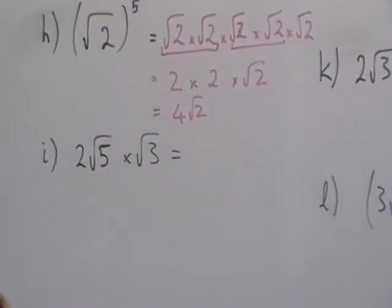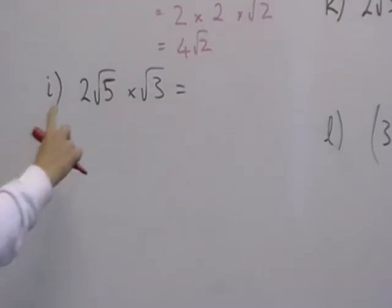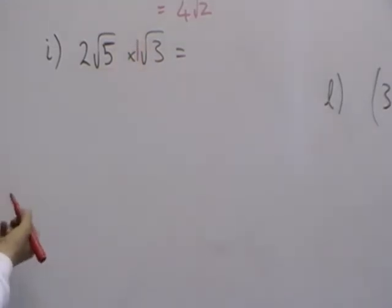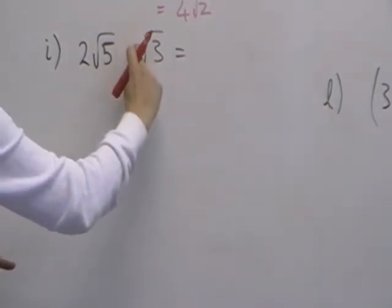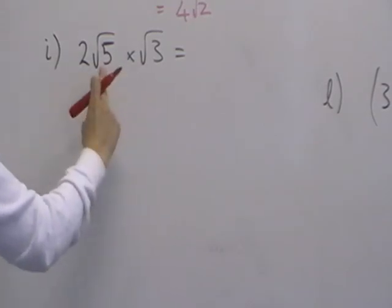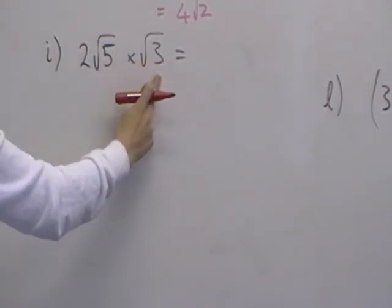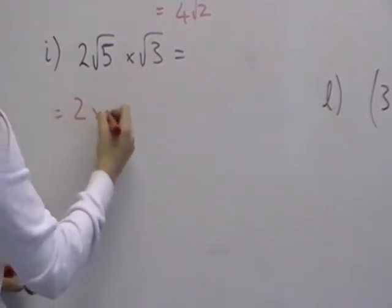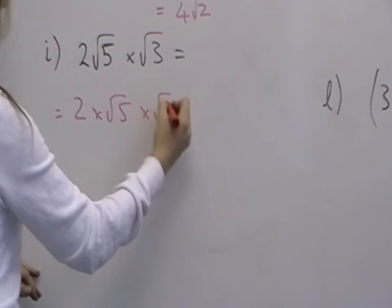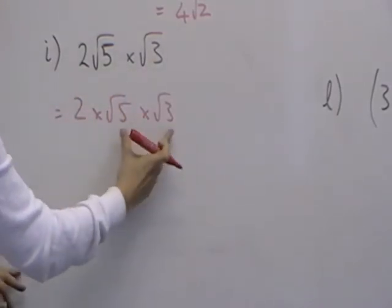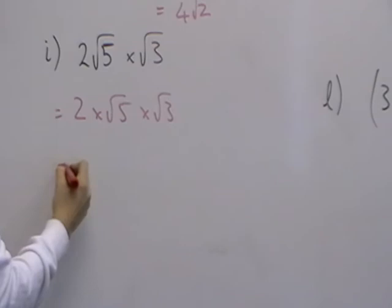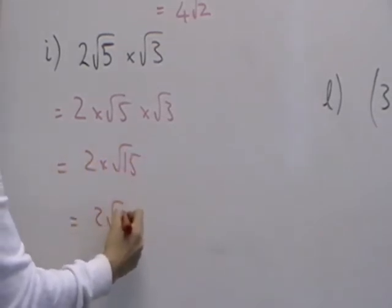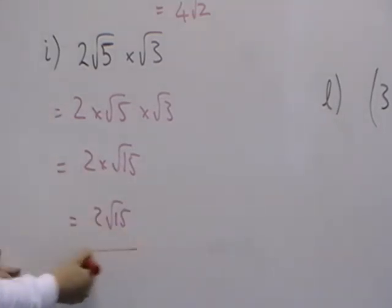Down to I. Now here, we've got 2 lots of root 5 times, and if you like, that's like having a 1 lot of root 3. But we don't always write that number 1 in. So we multiply the root 5, multiplies by the root 3 to give root 15. So that becomes, it's the same as 2 times root 5 times root 3. And we know that root 5 times root 3 is root 15. So that becomes 2 times root 15. And if you wish to just go straight to the answer and miss out those lines, that is okay.